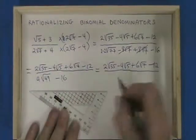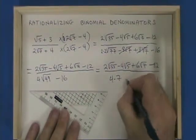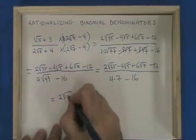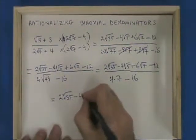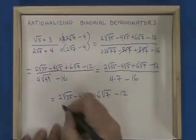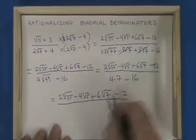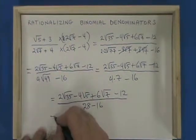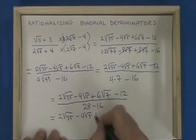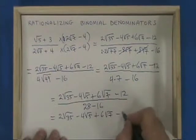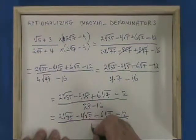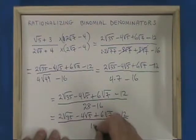The square root of 49 is 7, so I have 4 times 7 minus 16. That gives us 28 minus 16, which is 12.